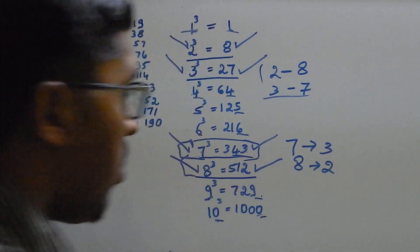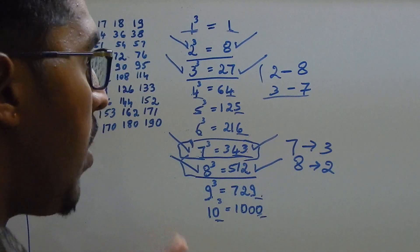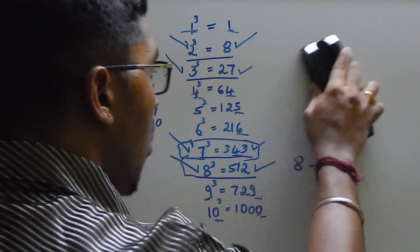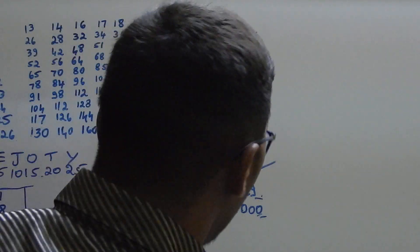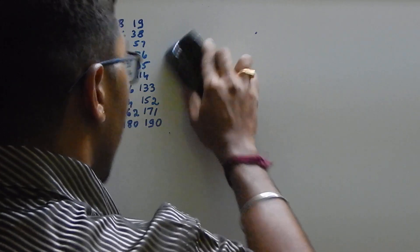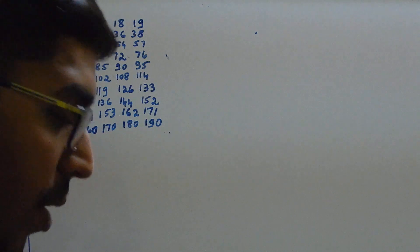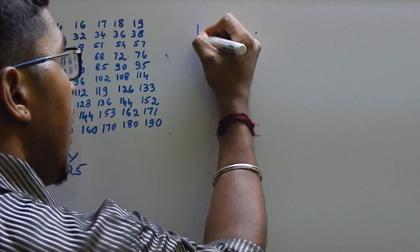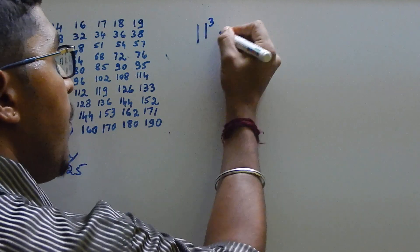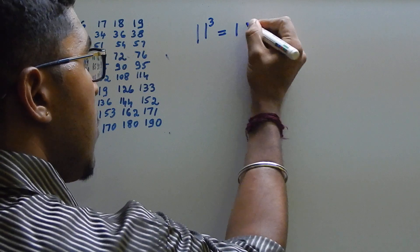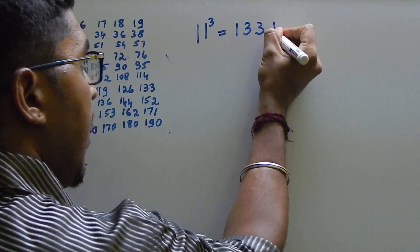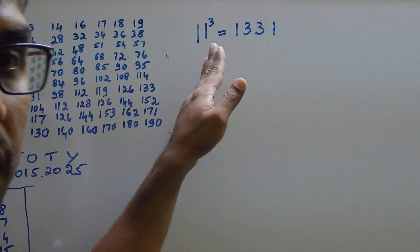So, 1 cube, it is easy to remember. Now, going to 11 cube to 20 cube. How we write 11 cube? 11 cube, 1331. This you should be remembering.